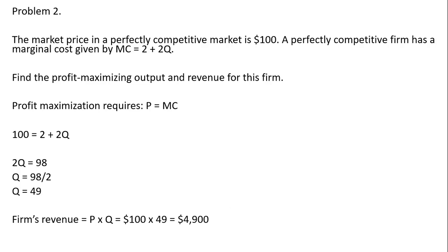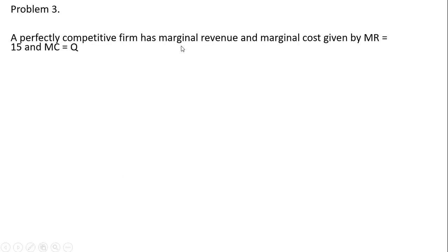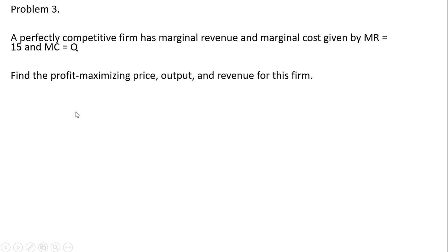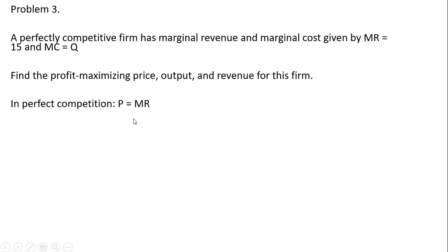Moving on to problem three. A perfectly competitive firm has marginal revenue and marginal cost given by the following equations: marginal revenue equals 15 and marginal cost equals Q. The key thing to recognize is that in perfect competition — and perfect competition only — price equals marginal revenue. This condition does not hold under monopoly, for example.